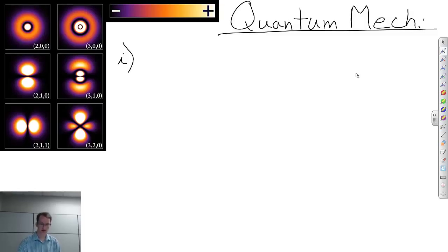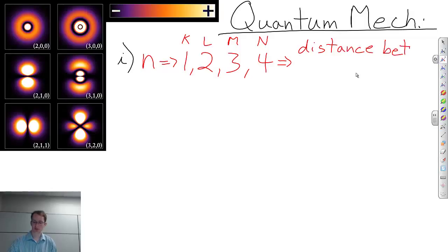The first of these is n. n can have a value of 1, 2, 3, or 4. And these might be described in your book as k, l, m, and n. And what this tells us, it essentially tells us roughly the distance between the electron and the nucleus.